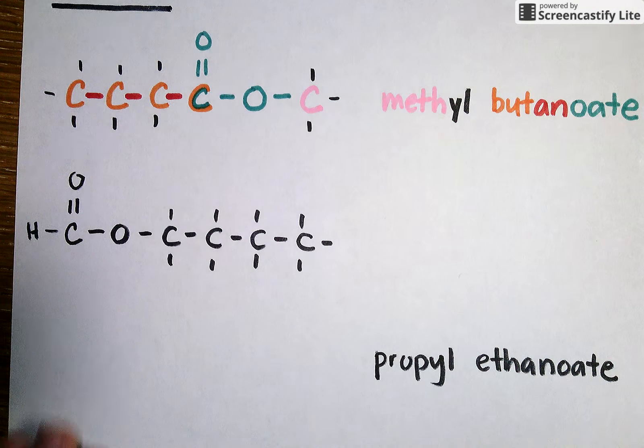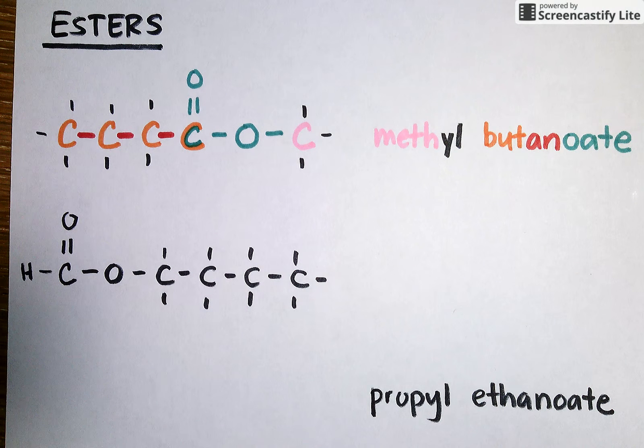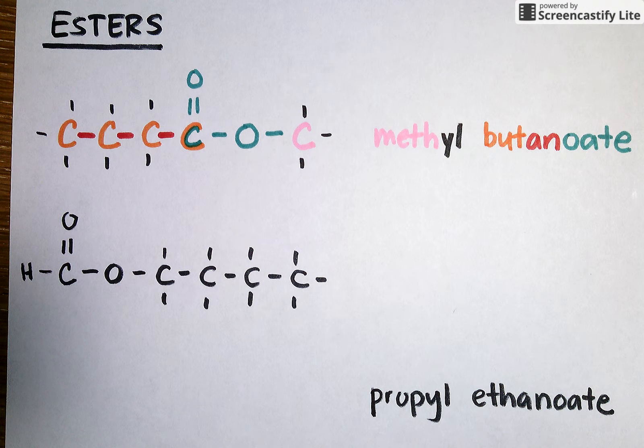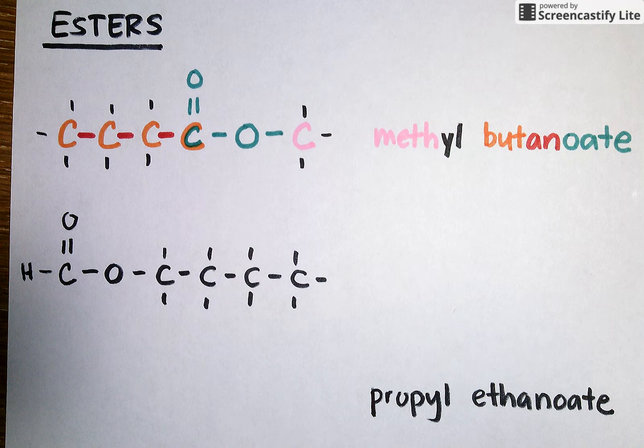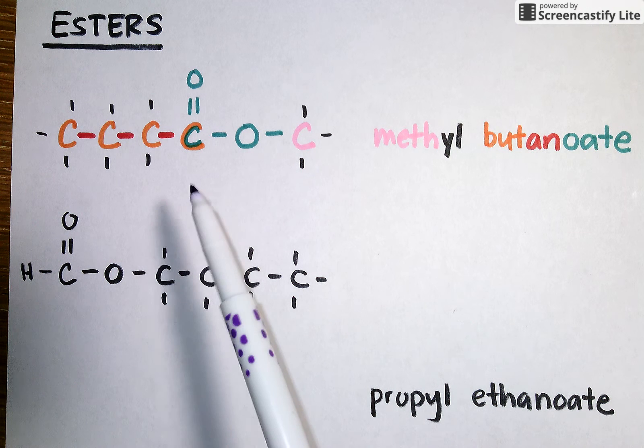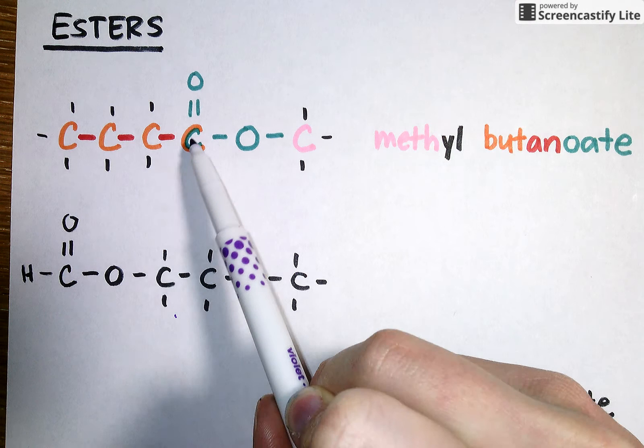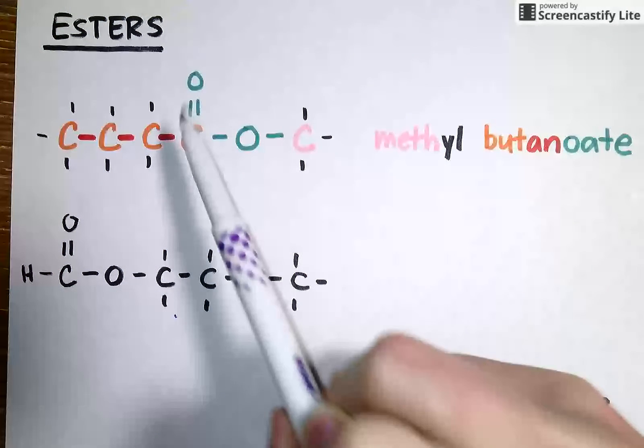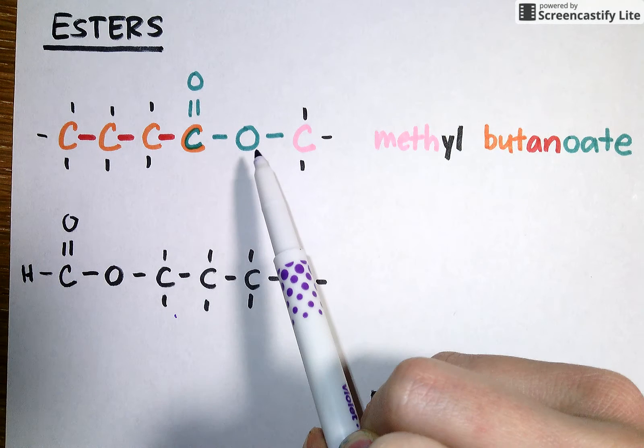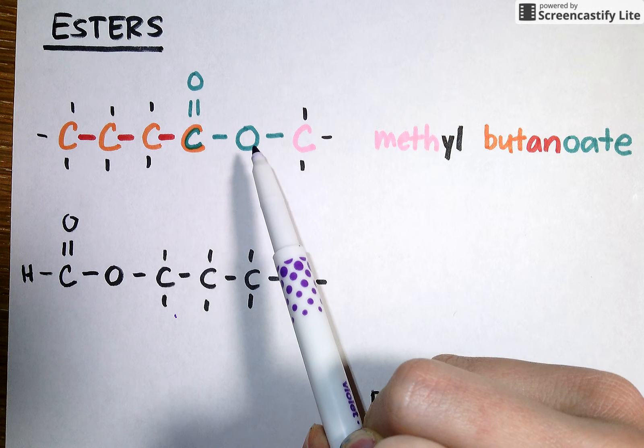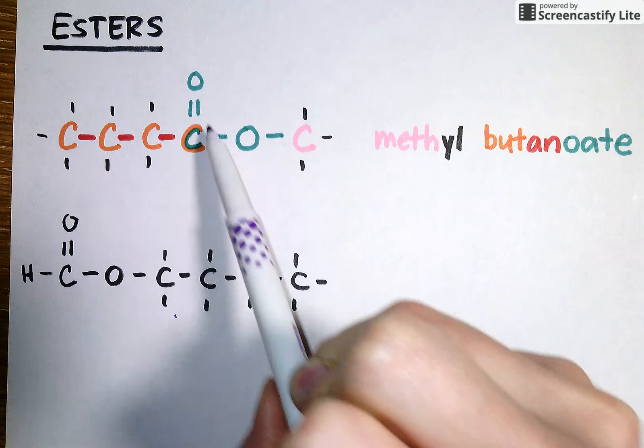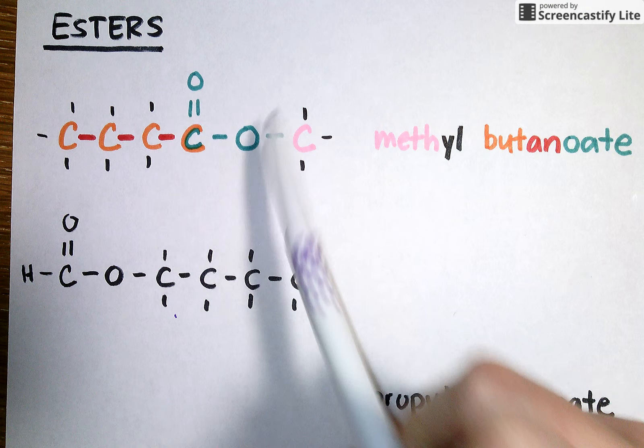The second class of compound that we're going to look at are the esters. These are the most difficult compounds on table R to name because they're very particular about which prefix comes first. If I take a look at this example molecule, what I see is that the ester functional group C double bonded to O attached to another O divides up again two chains of hydrocarbons. I've got orange on the left and pink on the right.